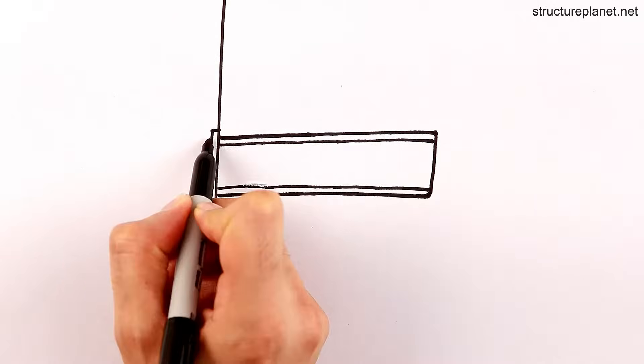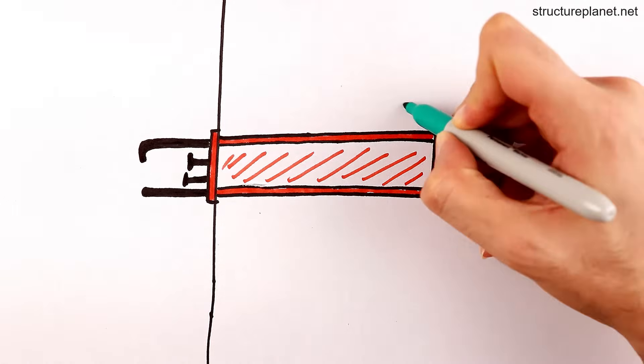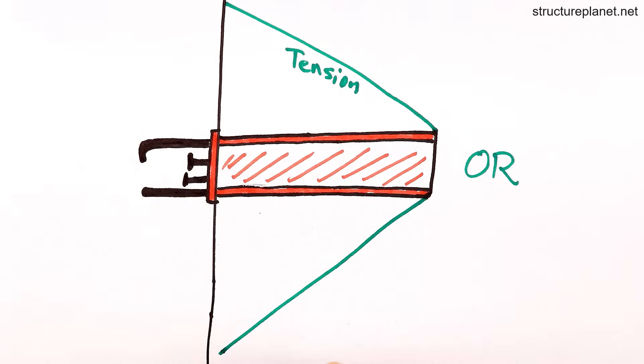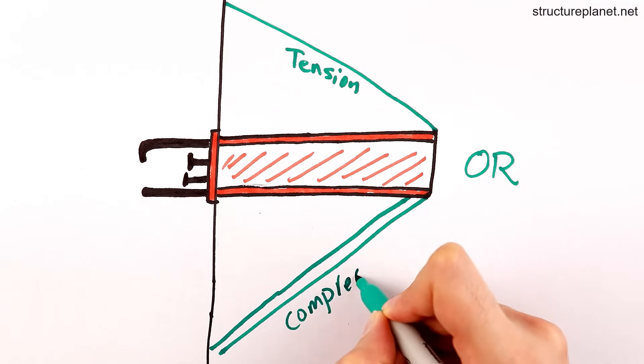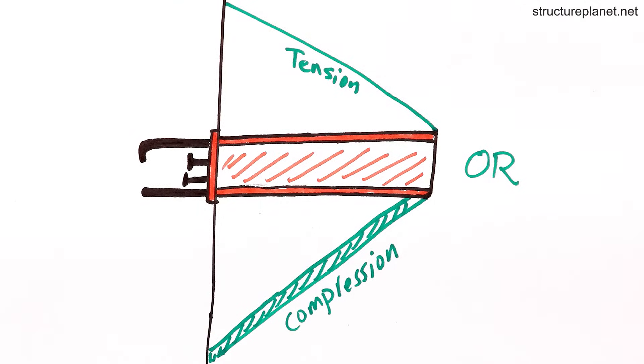Also, more common in non-building structures, we can add a compression or tension element to help supporting the cantilever. As you can see, the cantilever is now supported at an extra point. Use of these supports is not common in buildings given the fact that it will be architecturally unpleasing.